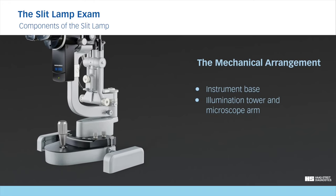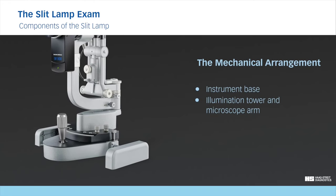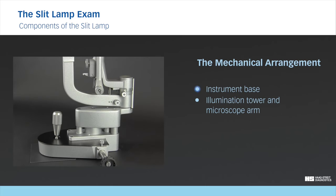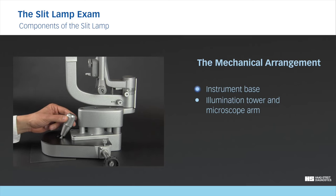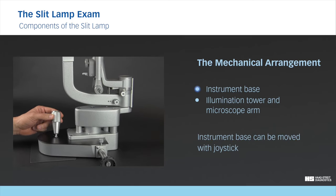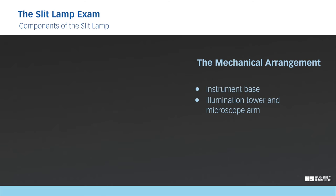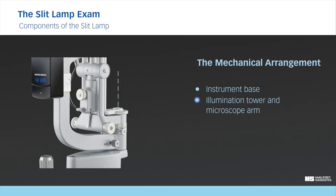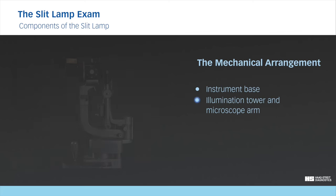The mechanical arrangement consists of the instrument base that supports the illumination tower and the microscope arm. The instrument base provides the platform to position the slit lamp in front of the patient and to control focus. The fine three-dimensional movements during the examination are controlled with the joystick. The illumination tower and the microscope arm share a common pivot. In normal use, the focus of the slit beam and that of the microscope are at the same point.